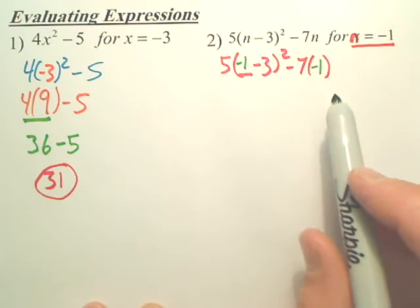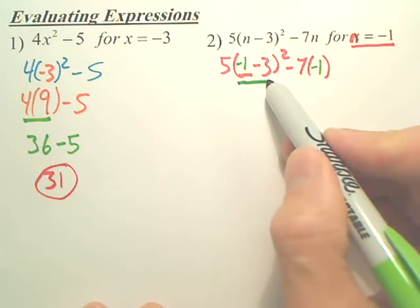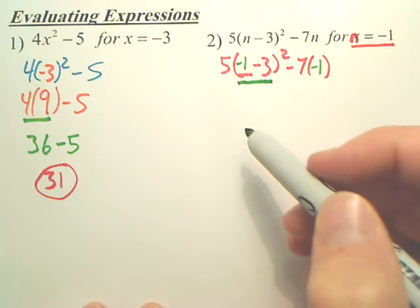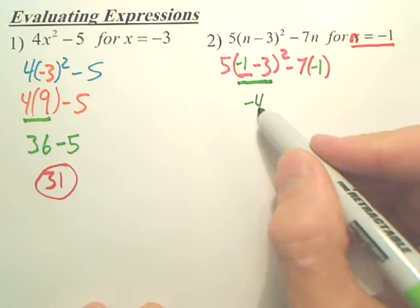Now we do order of operations. So order of operations, you first do the parentheses. I have a negative 1 and a negative 3. That would be negative 4.